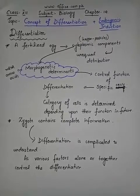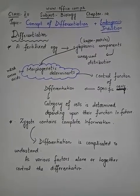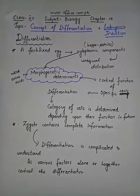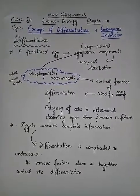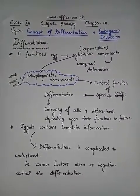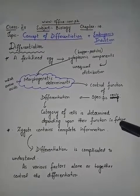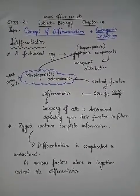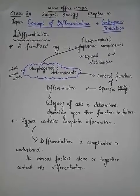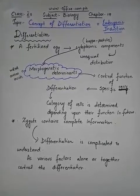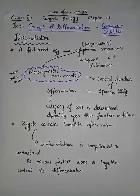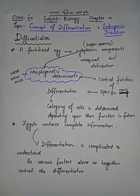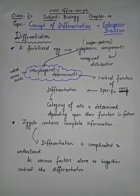These morphogenetic determinants, which include messenger RNA and amino acids, control the function of specific cells and are also responsible for directing groups of cells toward their specific function — which is actually differentiation. The category of a cell is determined depending upon its function in the future organism. A zygote contains all the complete information necessary for development, but the process of differentiation is very complicated and difficult to understand — how cells are differentiated and how it is regulated as to what cells are going to become part of which organ.